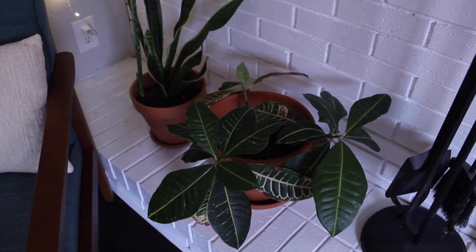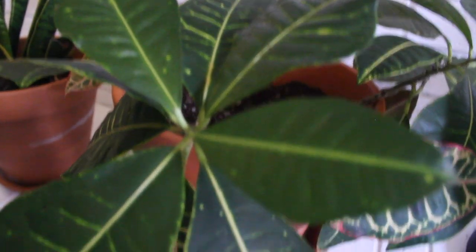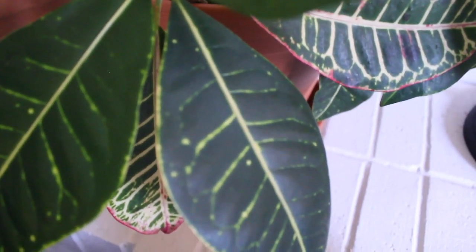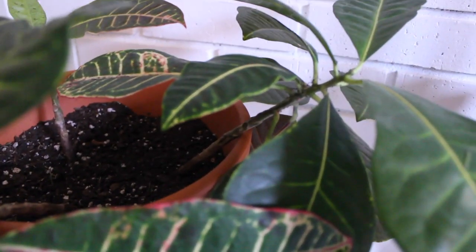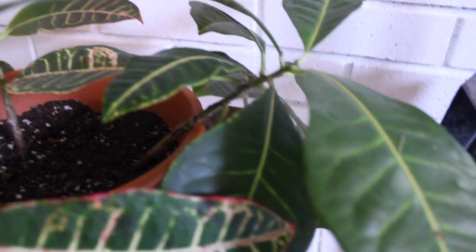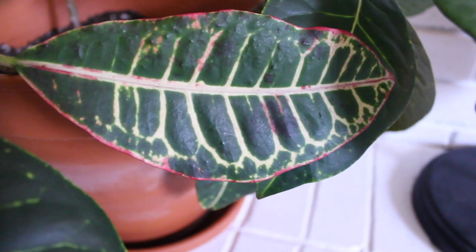Over on the left side of the fireplace I have a croton, however you want to pronounce it. It is very green because it is pretty far away from the window and it was in our last house as well. As you can see, it has on some of the older leaves some of that more classic red, orange and yellow coloring.